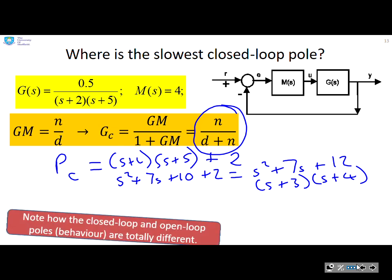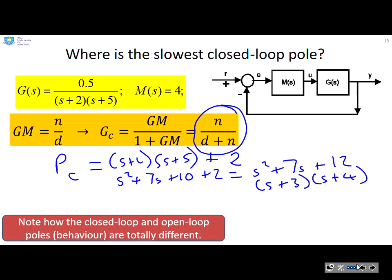So again, what do you notice? The closed loop and open poles are different. In the open loop, I had minus 2 and minus 5. And in the closed loop, I've got minus 3 and minus 4.